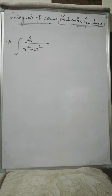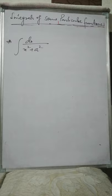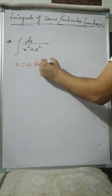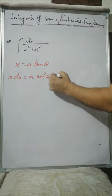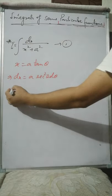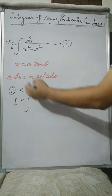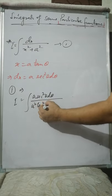Now let's evaluate the integral of dx over (x squared plus a squared). We use trigonometric substitution. Since it is of the type a squared plus x squared, we put x equals a tan θ. Differentiating both sides, dx equals a sec squared θ dθ. So the integral becomes: a sec squared θ dθ divided by a squared tan squared θ plus a squared.